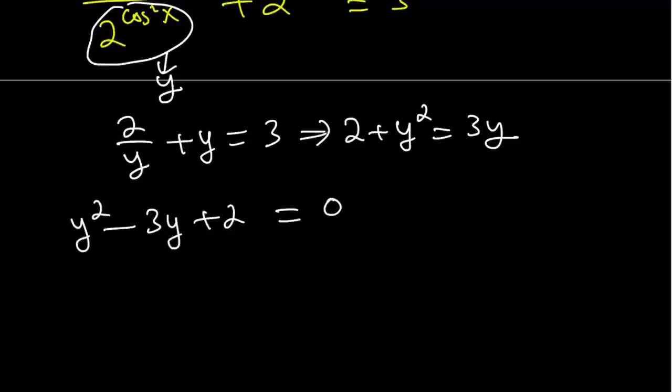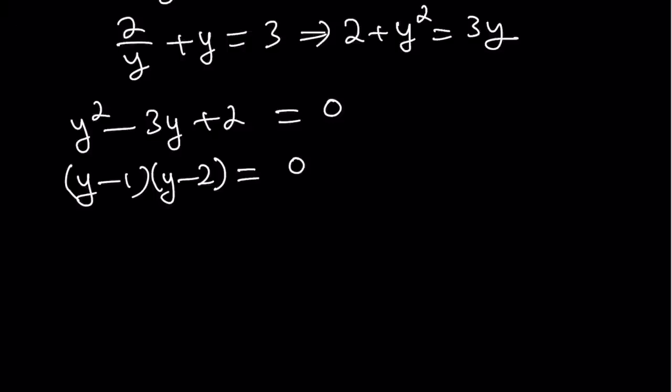Now we can go ahead and turn this into a quadratic, which is fairly easy to solve. And as you know, this is factorable. So I can just write it as y minus 1 times y minus 2. And then this gives us two solutions for y. And they're both valid, as you will see in a little bit. So first solution, y equals 1.